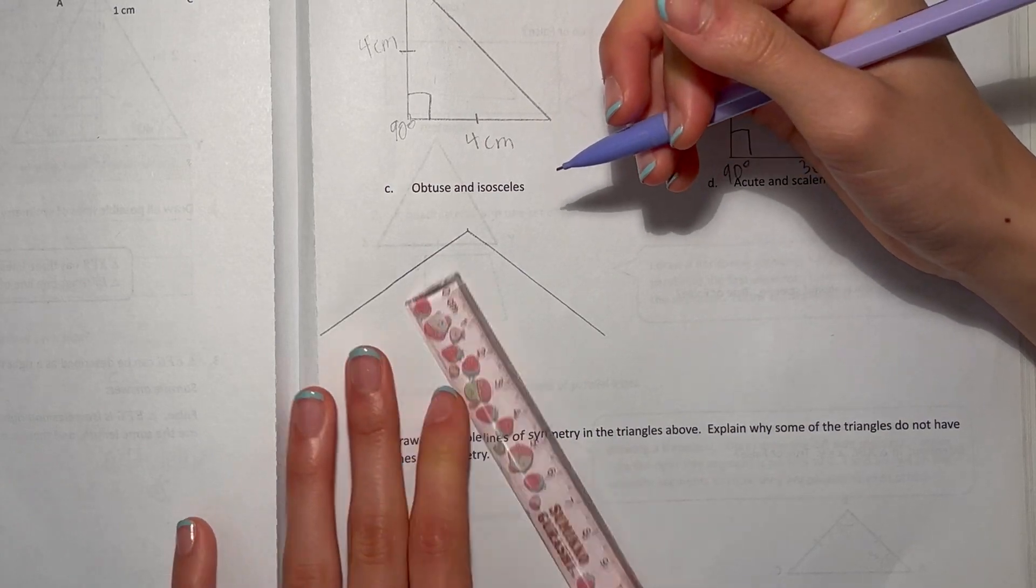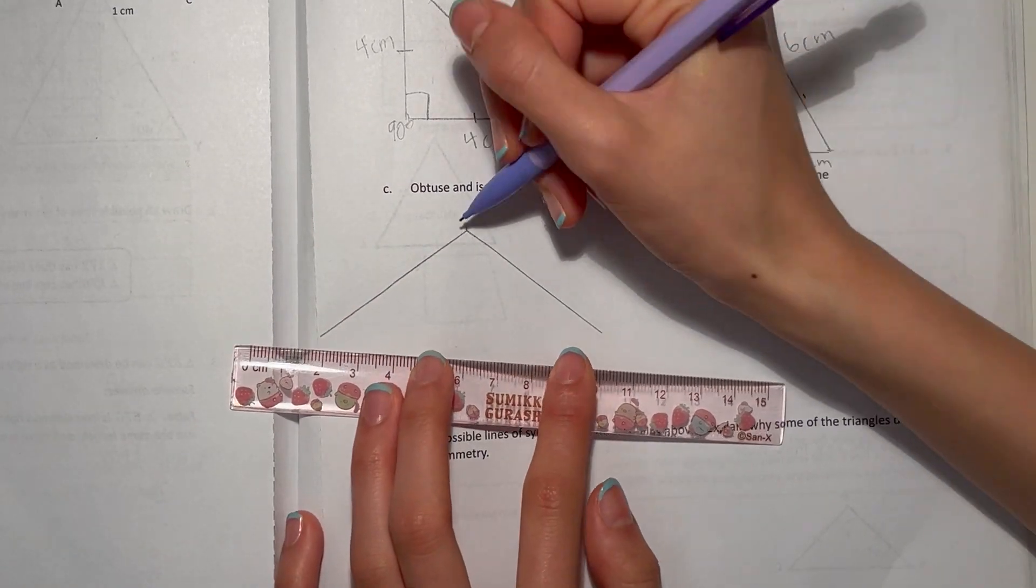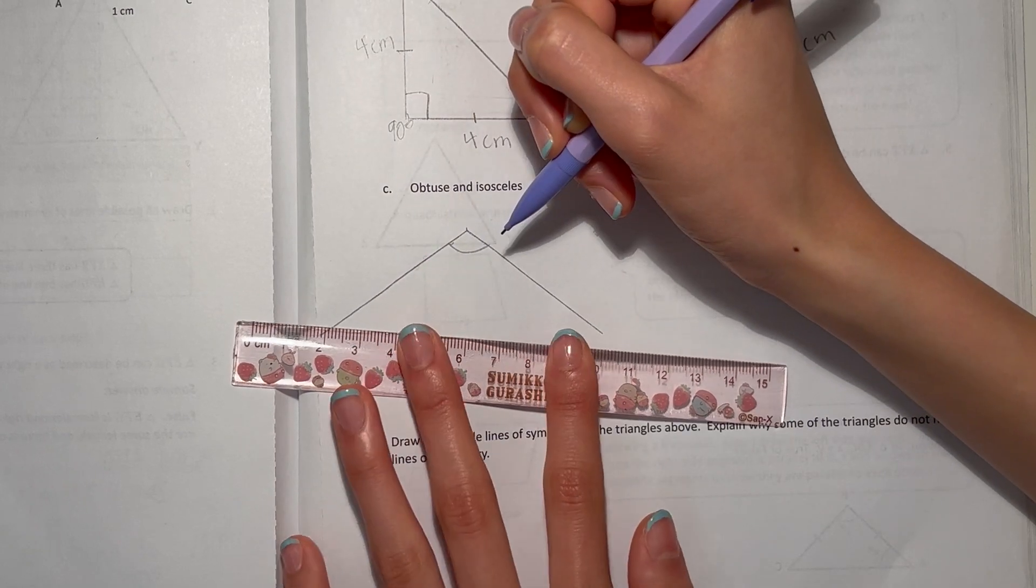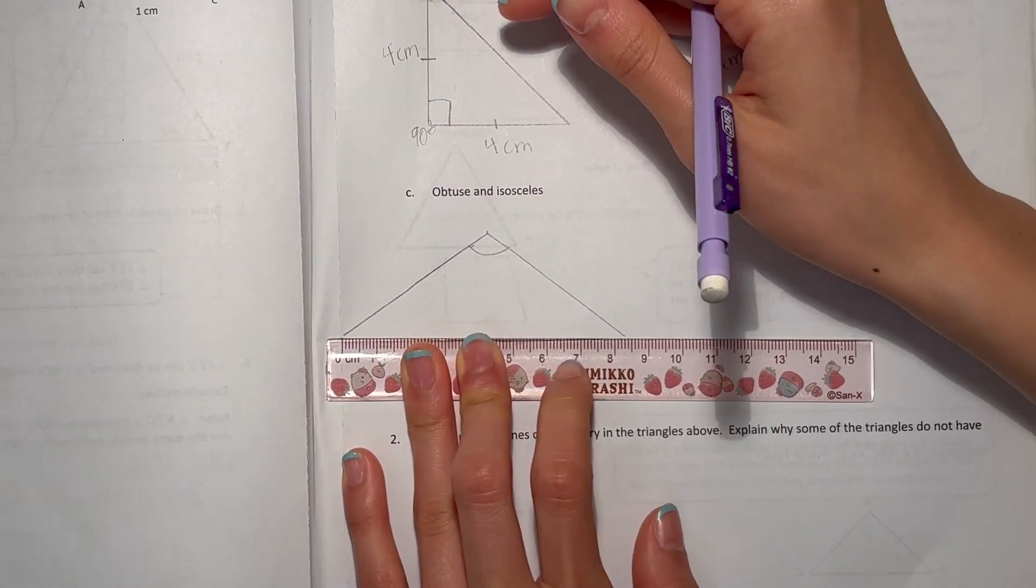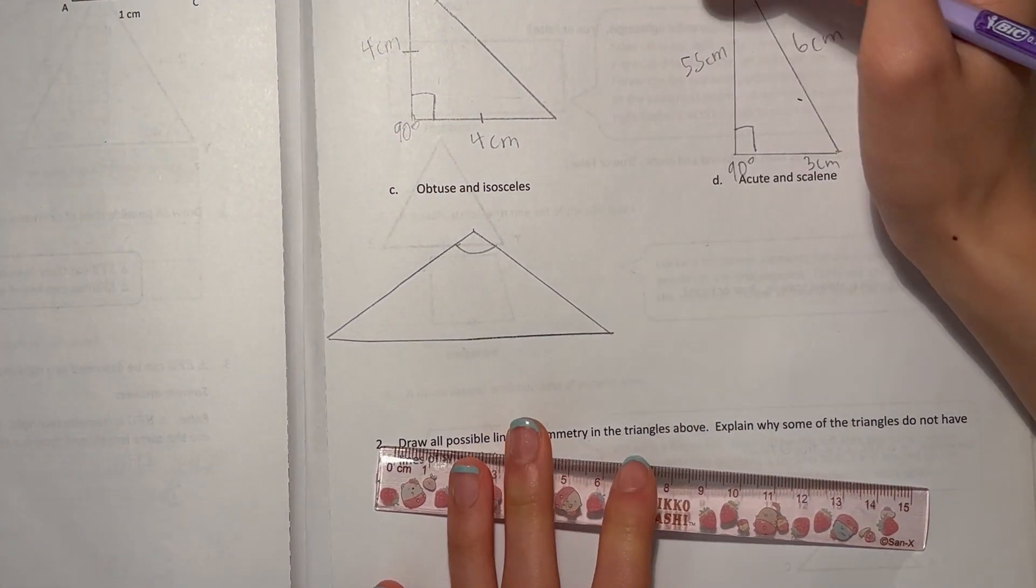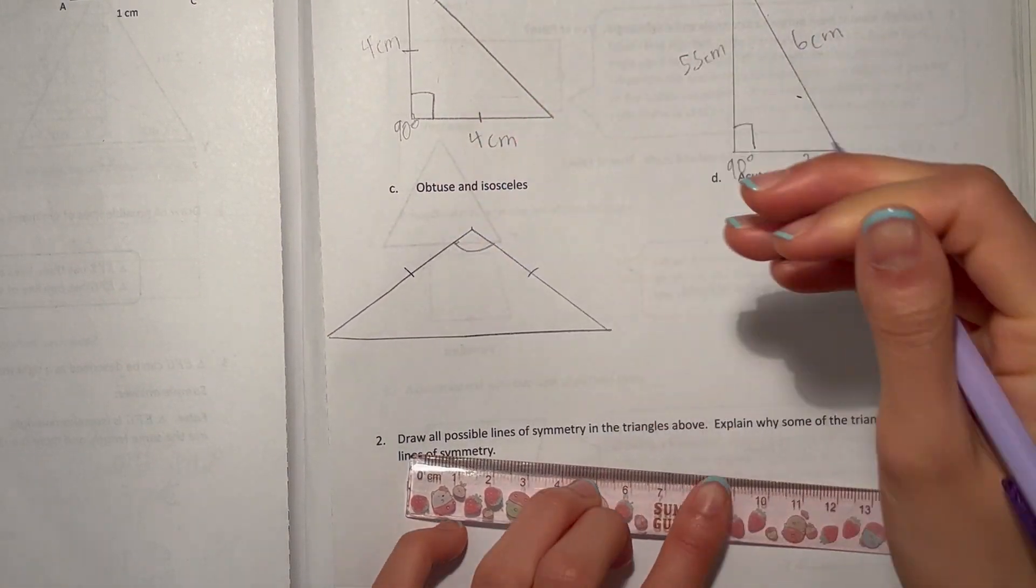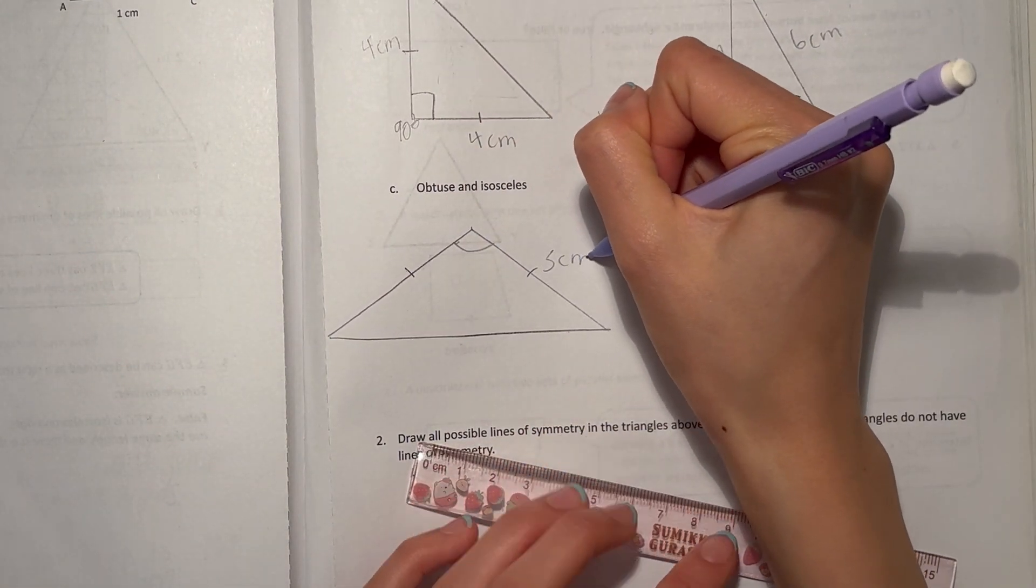So then when we have our triangle, look at that, it's obtuse. So here we have our obtuse angle. And over here, what we need to do is draw our base.